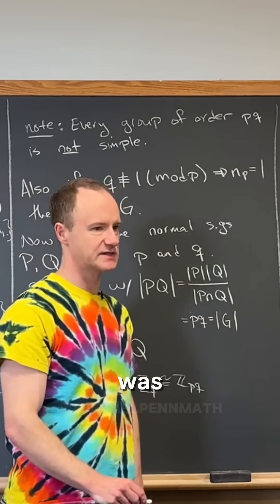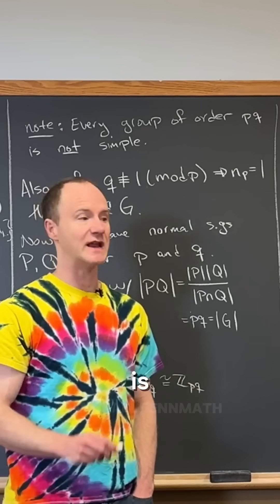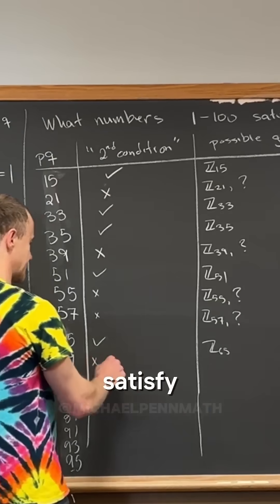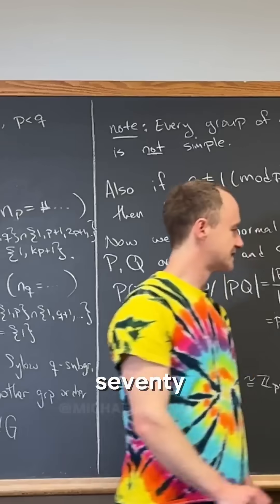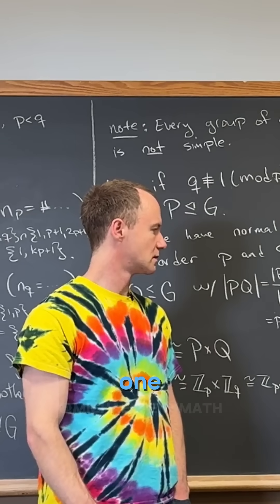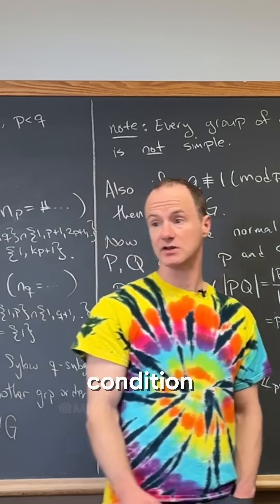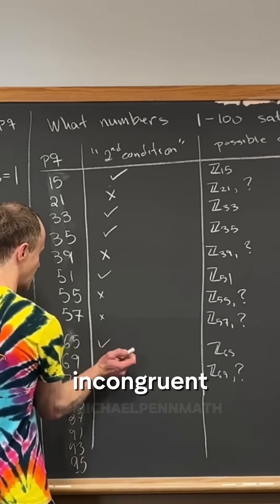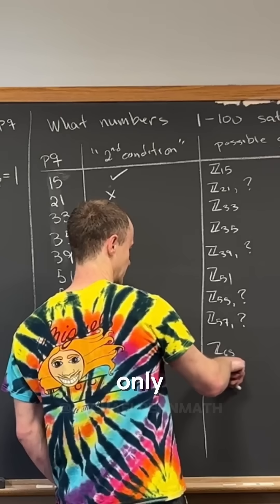69. So what was 69? Three times 31? 31 is congruent to one mod three, doesn't satisfy the condition. So this is Z69 and then question mark. 77. Yeah, what is 69? But anyway, it doesn't satisfy. No, it does satisfy the condition because 23 is incongruent to one mod three, right? So that means there's only one of them. Okay.